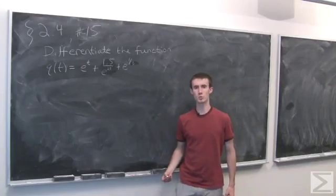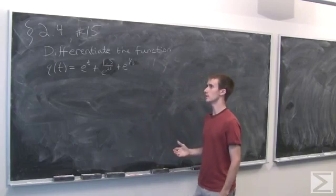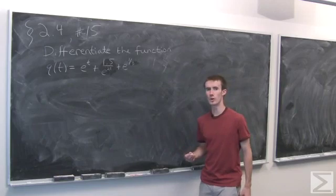In problem number 15 of section 2.4, we're asked to differentiate the function q of t equals e to the t plus 1.5 over e to the 2t plus e to the 1 third.